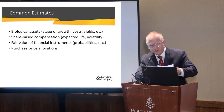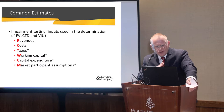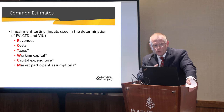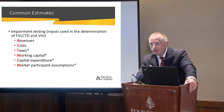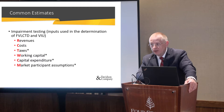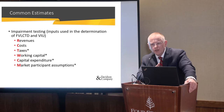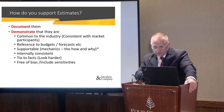Moving on to estimates. Common estimates include revenues and costs - obviously supportable by tying into historical revenues, historical costs, and historical margins. Things that are commonly forgotten are taxes, working capital, and capital expenditures. Thinking back to that client with growth from zero to $500 million in a retail operation - how much working capital do you need to inject to actually attain that? Make sure your estimates are complete.